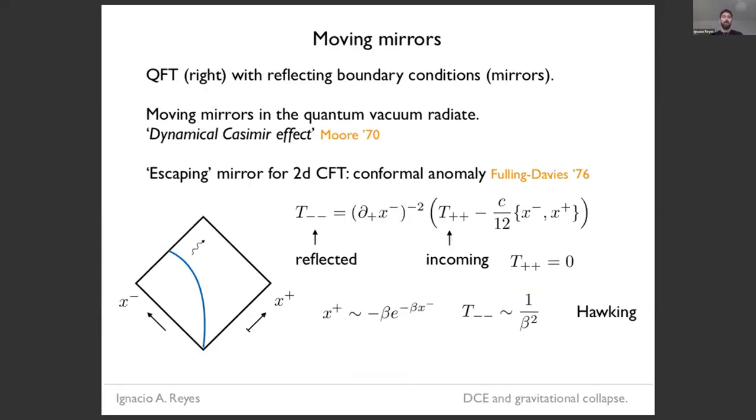Okay, so what I want to talk about today is the story of moving mirrors. So what does this mean? We have a quantum field theory, which in here is going to be living to the right of the mirror, and there's a surface where we impose reflecting boundary conditions. Now it is very well known that moving mirrors radiate, even if we have the vacuum. And this is sometimes called the dynamical Casimir effect.